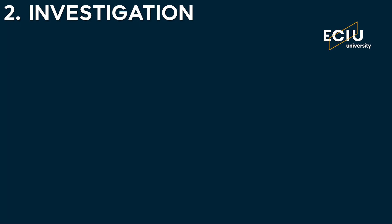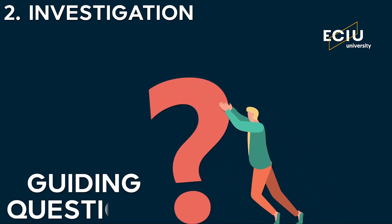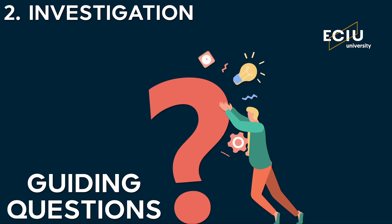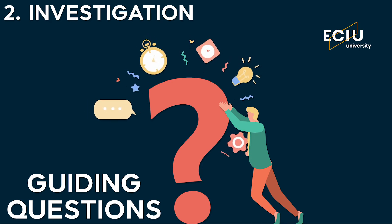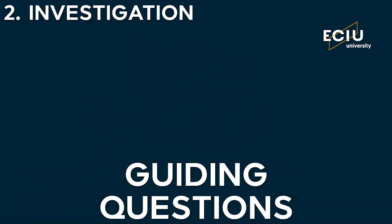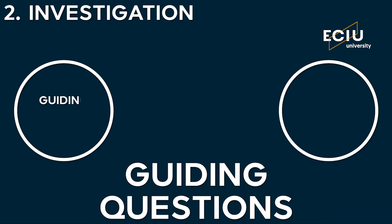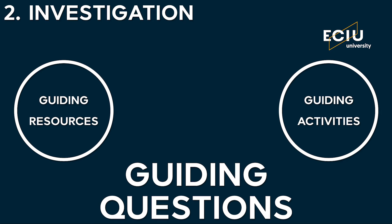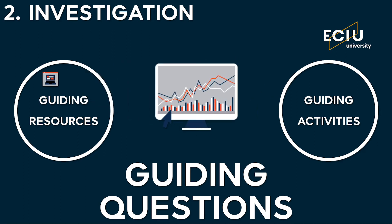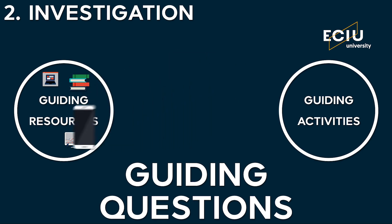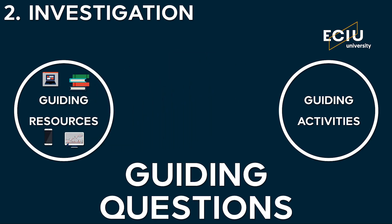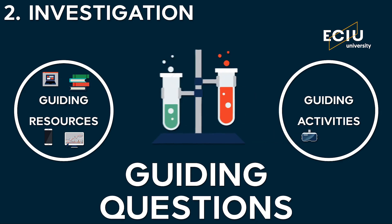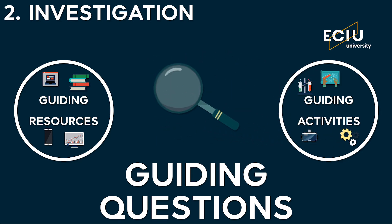In the second phase, investigation, the learners begin with formulating guiding questions — questions that include everything that needs to be learned to really understand and analyze the actionable challenge and develop an informed solution. Based on these guiding questions, the learners define and find guiding resources and activities — any resource or activity that helps answer the guiding questions. Examples of guiding resources include courses and online content, databases, textbooks and social networks. Examples of guiding activities include simulations, experiments, projects, problem sets, research and games.